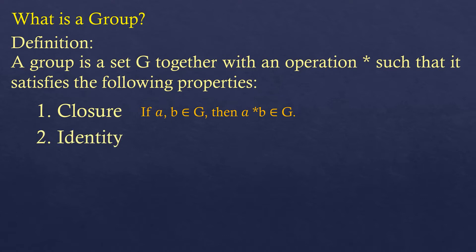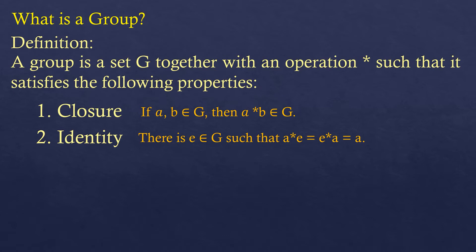Another property is the identity property: there exists an element E in the set G such that A star E equals E star A equals A. There is an identity element E — for addition we use zero, since any number plus zero is itself; for multiplication we use one, since any number times one is itself.